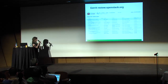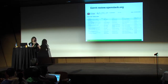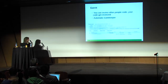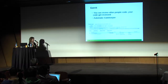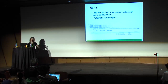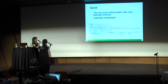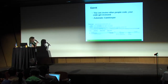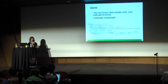Gerrit is the tool we use for code review. It's also an automatic gatekeeper — tests are run every time a patch is submitted, and again before merging when approved. The merge happens only if tests pass successfully. There is no human merging code in OpenStack — it's done automatically through Gerrit and Jenkins, which runs the tests.